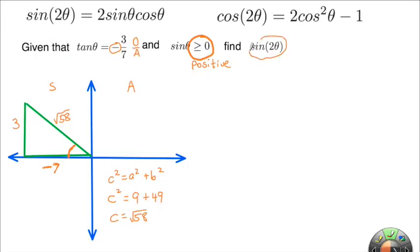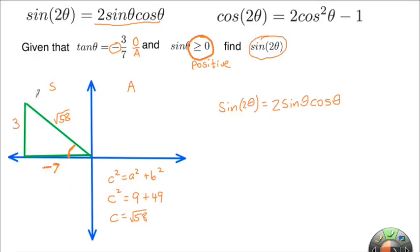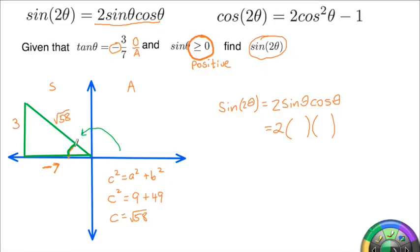Now we want to find sine of 2θ. Sine of 2θ has the formula: sine of 2θ equals 2·sin(θ)·cos(θ). So instead of dealing with the double angle, we break it down into single angles we can calculate using this triangle. Sine of θ is opposite over hypotenuse, so it's 3 over √58. And cosine of θ is adjacent over hypotenuse, so that's negative 7 over √58.